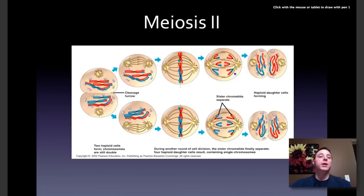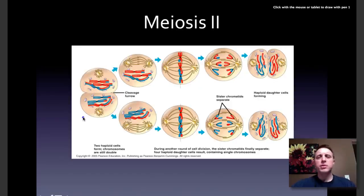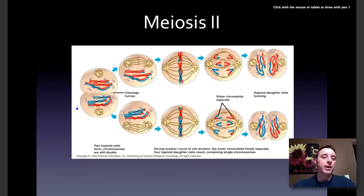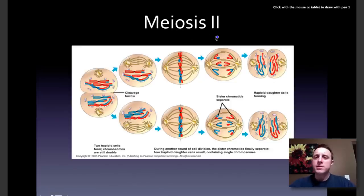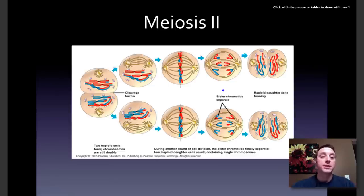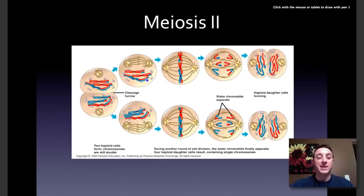Moving on into meiosis II: there is really no interphase between meiosis I and meiosis II — sometimes there's a very short interphase, but there is no DNA replication, because the chromosomes are already in a replicated state. Meiosis II is very similar to mitosis. If you watched a cell go through meiosis II without being able to count the chromosomes, it would look pretty much exactly the same as mitosis.